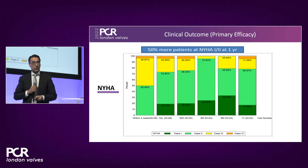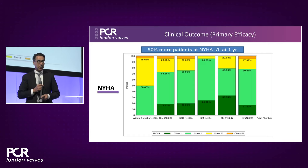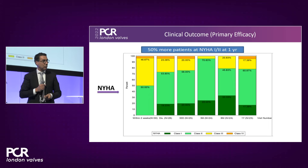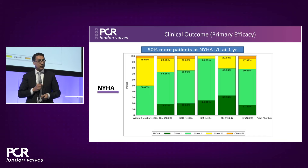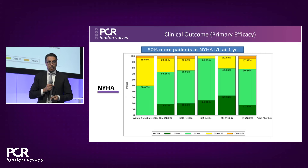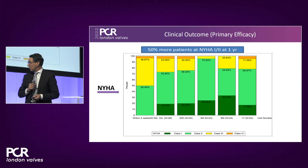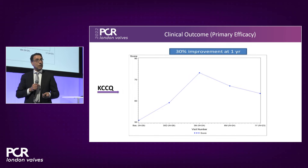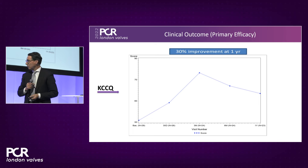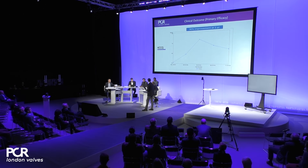Clinical outcomes showed excellent NYHA class improvement, with almost 90% of patients in functional class I or II at three-month follow-up, similar to the TEER population. Some patients returned slightly toward their prior classification at one year, as expected from a functional MR population. The KCCQ quality-of-life score showed improvement of over 20 points at three months — very encouraging, correlating with the echocardiographic data.